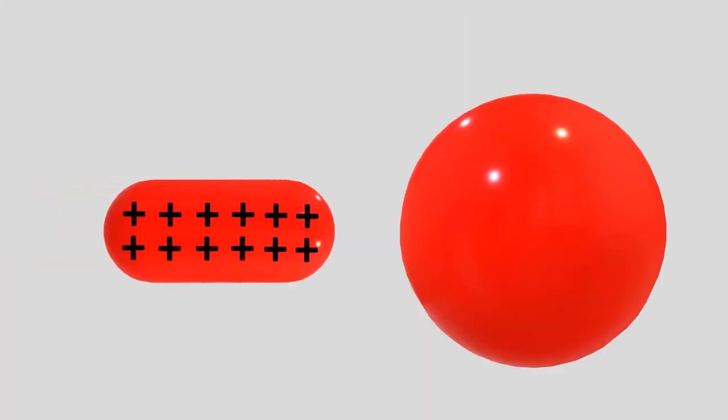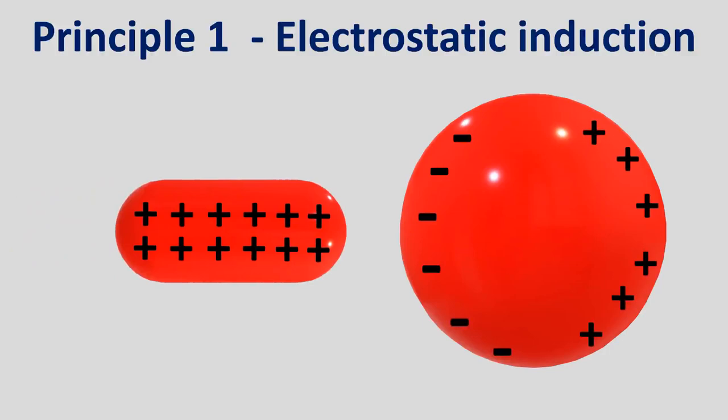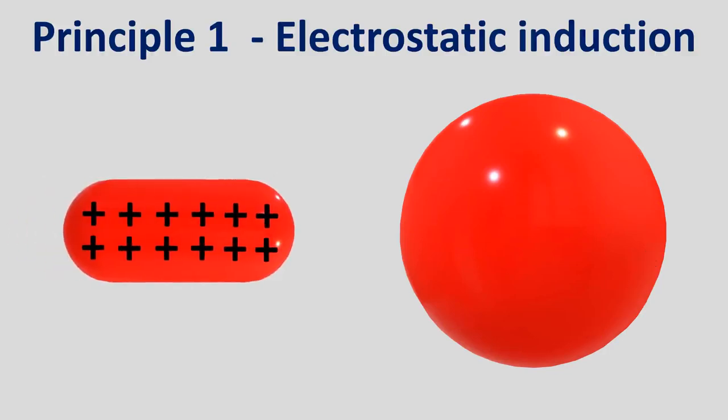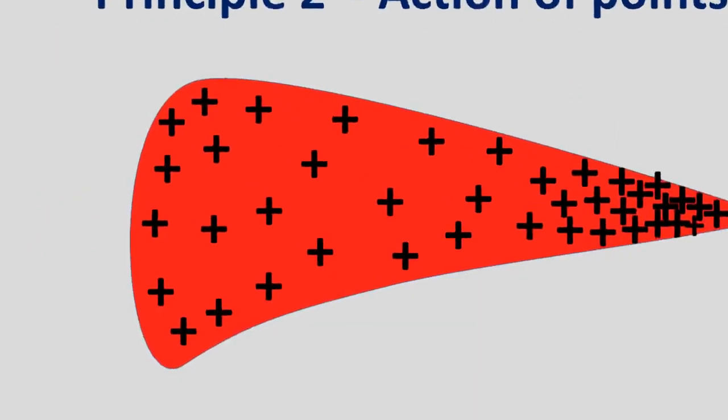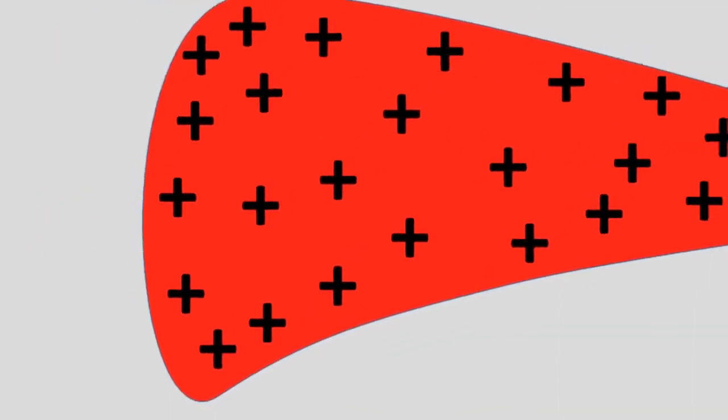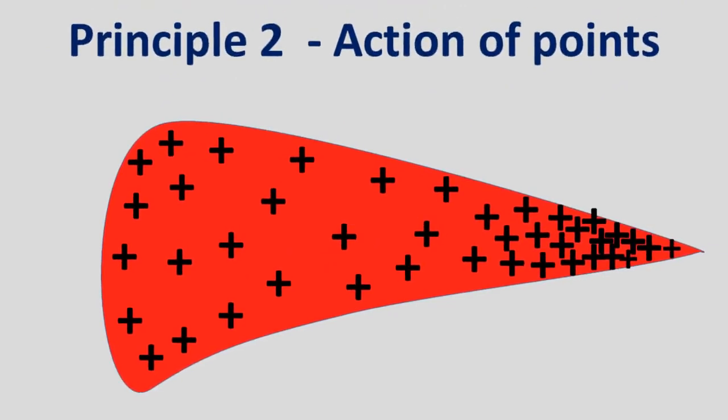Electrostatic induction is a process of generating static electricity in a material without touching it. The electric charges on the surface of a charged object do not necessarily spread out evenly.